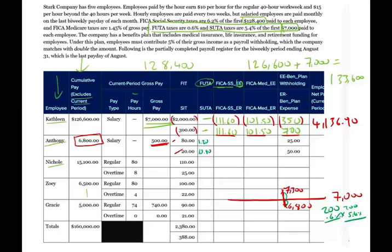For Medicare, there's no limit — it's $500 times 1.45%, which is $7.25. He pays $7.25 and the employer pays $7.25. The benefit plan withholding has already been filled out — he pays $25 and the employer pays double that amount. Anthony's net pay is $336.75. Remember, we only deduct the employee portions.